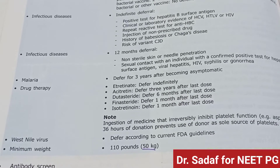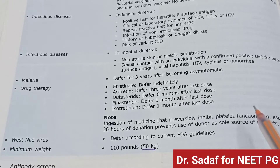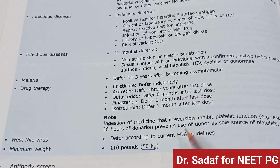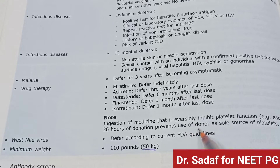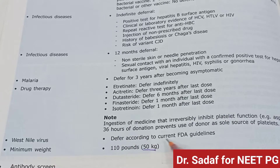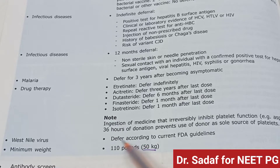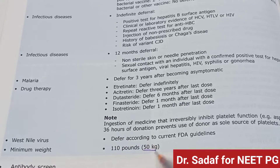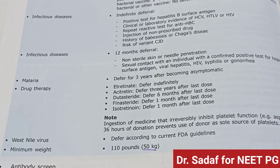Note: ingestion of medicines that irreversibly inhibit platelet function, for example aspirin within 36 hours of donation, prevents use of the donor as a sole source of platelets. West Nile virus — defer according to FDA guidelines. Minimum donor weight should be 110 pounds at the time of donation.